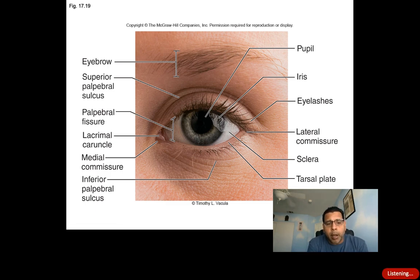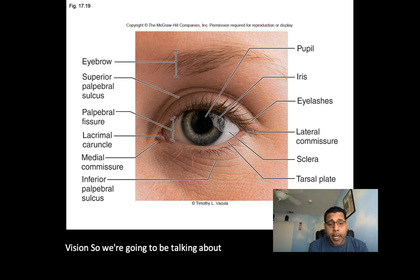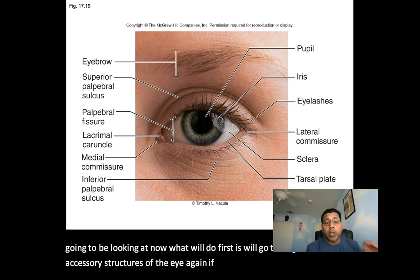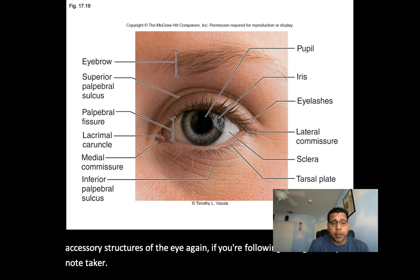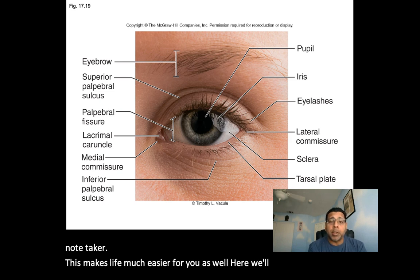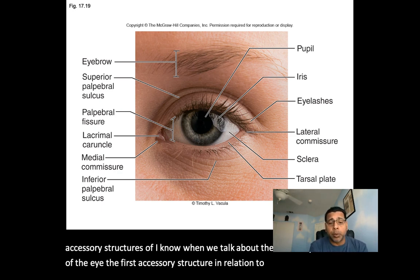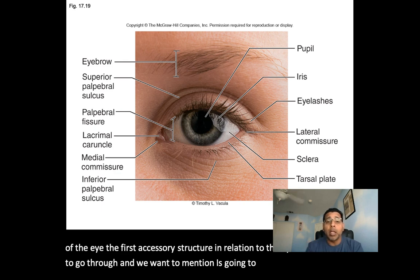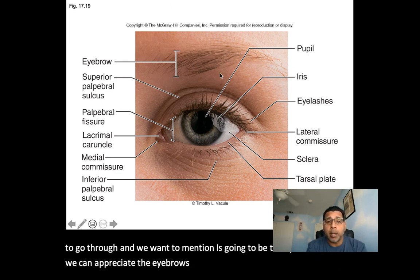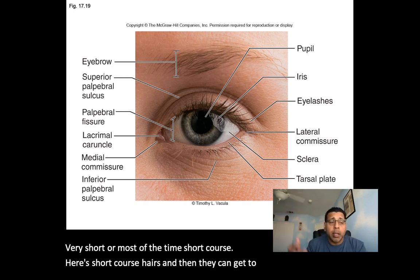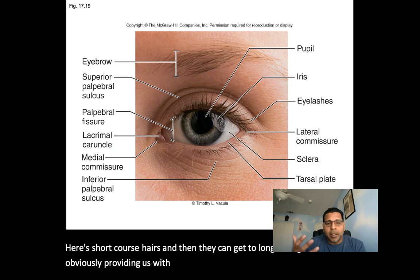When we talk about vision, we're going to be looking at the eye. First, we'll go through all of the accessory structures of the eye. The first accessory structure in relation to the eyes that we want to mention is going to be the eyebrows. The eyebrows are basically very short, coarse hairs, and they can get longer, providing us with more protection.